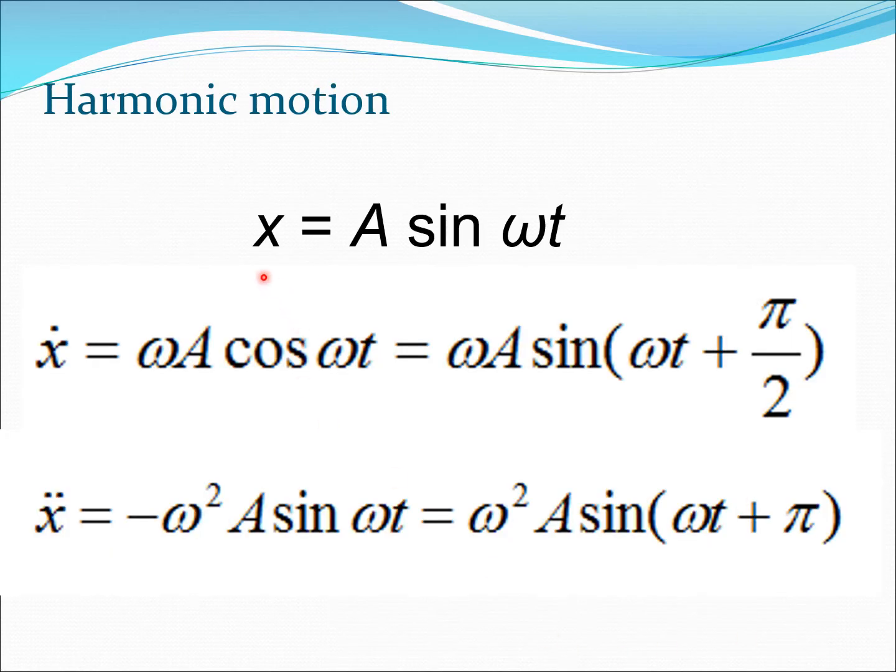So let us write down the fundamental equation for harmonic motion and then differentiate it once with respect to time and then differentiate it once more with respect to time. So x is displacement, x dot is velocity, x double dot is acceleration.